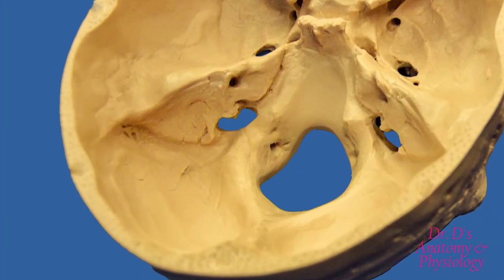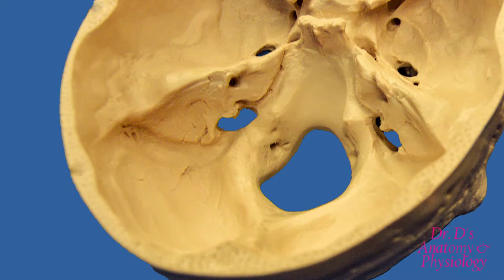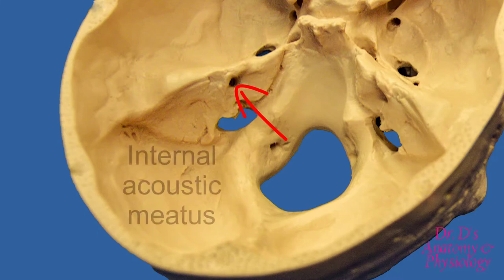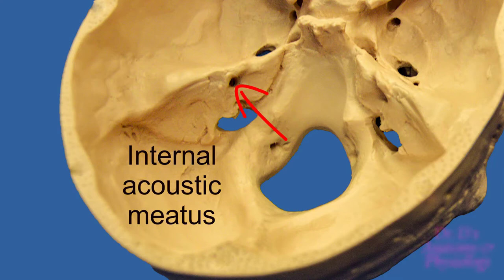Finally, when we take a look at the petrous part of the temporal bone, there's an important opening which permits two nerves to enter: the seventh cranial nerve, the facial nerve, and the eighth cranial nerve, the vestibulocochlear nerve. This opening is called the internal acoustic meatus. Meatus is simply a fancy word for canal, and the word acoustic can be substituted by auditory, so you can refer to this simply as the internal auditory canal.